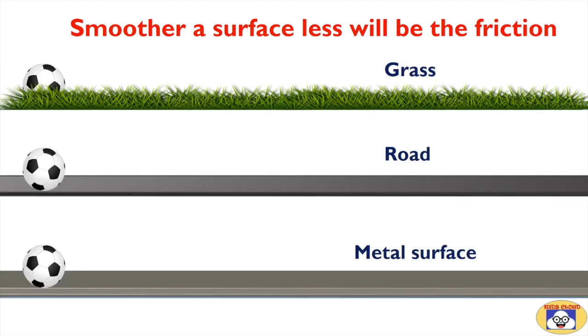Rough surfaces have more irregularities and hence have more friction. The smoother a surface, the less will be the friction.